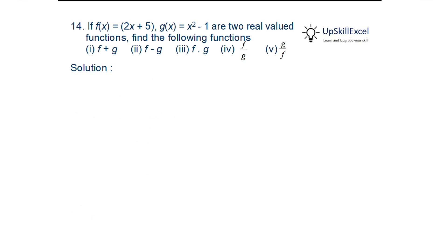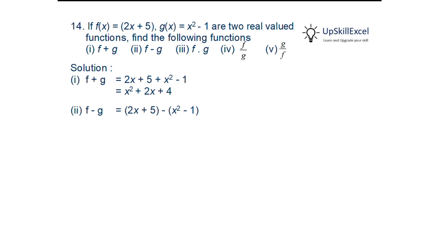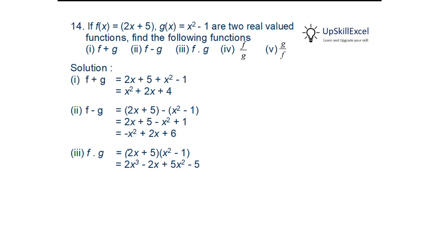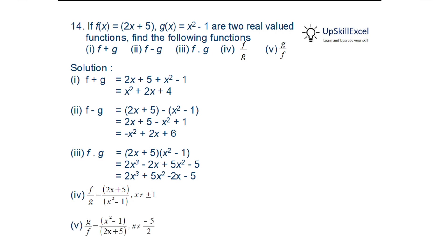Given two real-valued functions f(x) and g(x), find f+g, f−g, f·g, f/g, and g/f. f+g: substituting f(x) = 2x+5 and g(x) = x²−1 and simplifying. f−g: substitute and simplify. f·g: multiplying gives 2x³+5x²−2x−5 after rearrangement. f/g = (2x+5)/(x²−1), which is not defined at x = ±1. g/f = (x²−1)/(2x+5), which is not defined at x = −5/2.